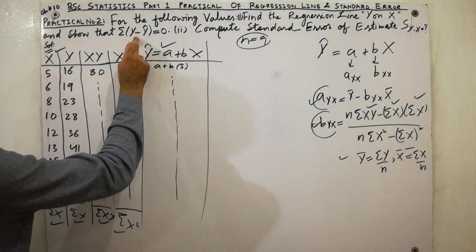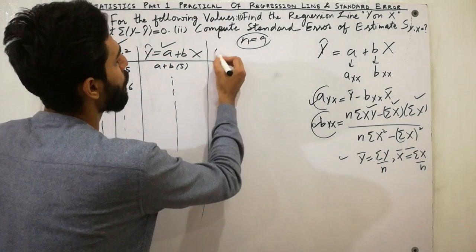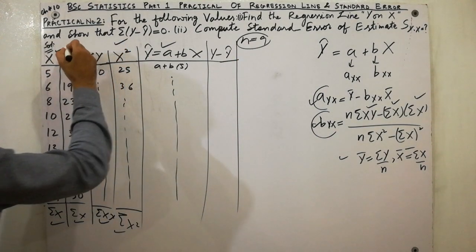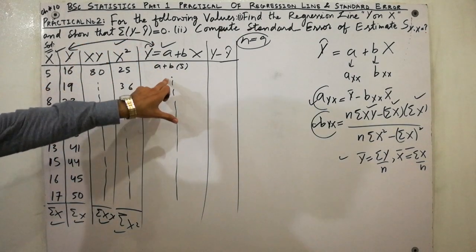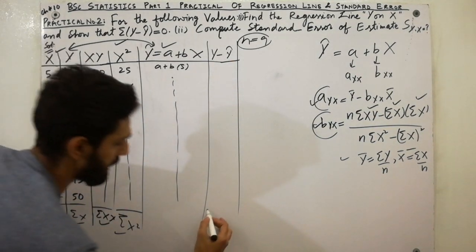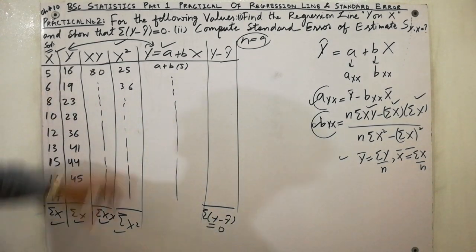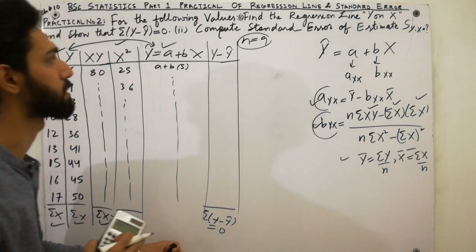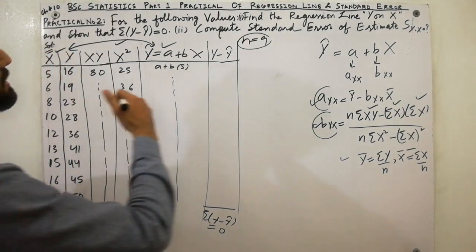The next point is to compute Σ(y − ŷ). Calculate y minus ŷ for each observation — for example, 16 minus the corresponding ŷ value, 19 minus its ŷ value, and so on. Must remember that Σ(y − ŷ) must equal zero — that is the main result to verify. You can post your answer in the comment section.